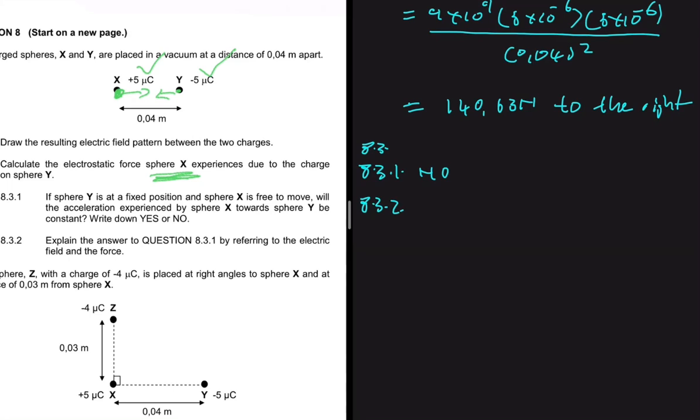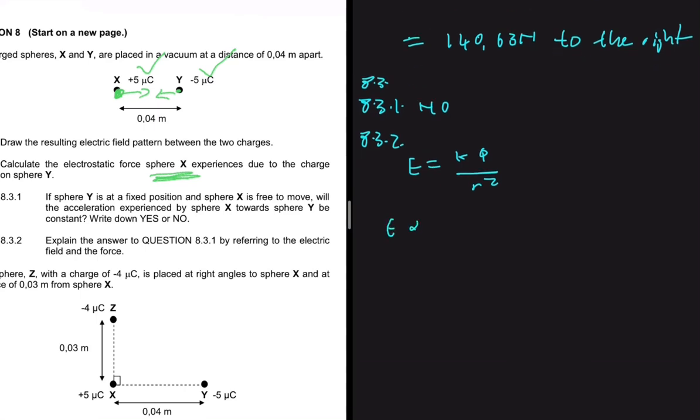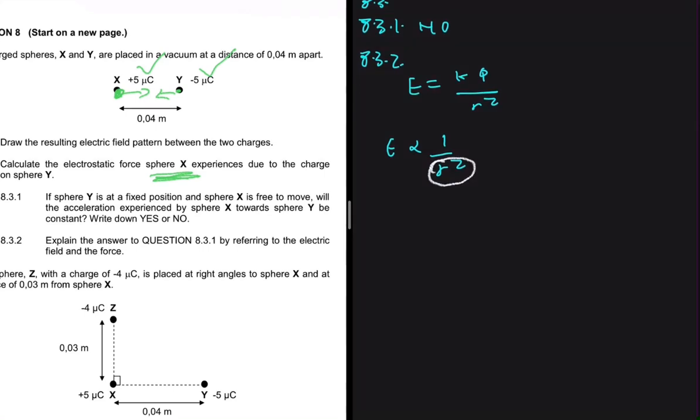So let's think about it. They're saying that we must explain by referring to the electric field and the force. So we know that the electric field is equal to K Q divided by R squared. And then we can see here that the electric field is inversely proportional to R squared. So the further away you move from the charge, the less electric field there is. But at the same time, we know that the electrostatic force is equal to the electric field multiplied by the charge you place in that electric field.